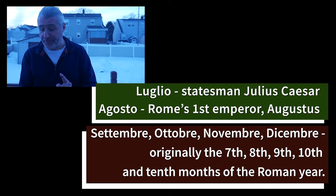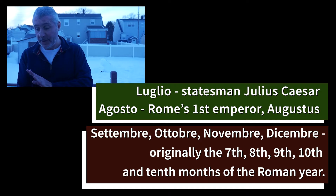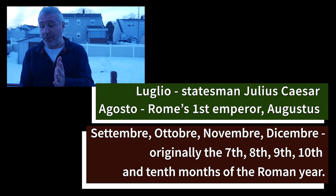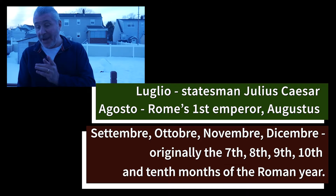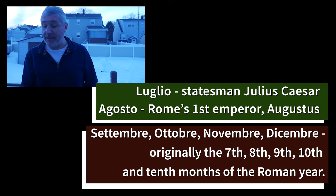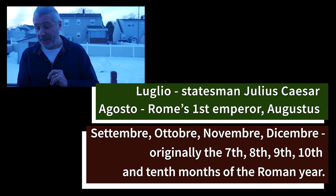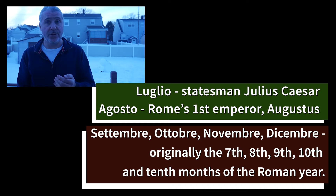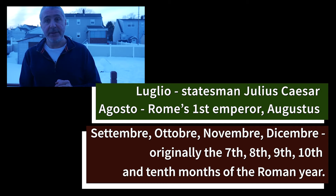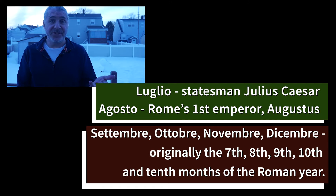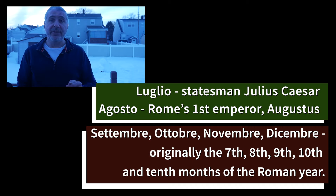The interesting thing is Luglio and Agosto — prior to those names, they were referred to as Quintilis and Sextilis, the fifth and sixth months of the year. And then from September to December, we have Settembre, Ottobre, Novembre, Dicembre — which were actually originally the seventh, eighth, ninth, and tenth months of the Roman year. Originally there were ten months in the year before two extra months were added. So September being the seventh — Settembre, sette, seven. Ottobre from otto, eighth. Novembre from nove, nine. And Dicembre from dieci, meaning ten. So that just stuck — September through December is seven, eight, nine, ten — even though we have twelve months in the year, because two additional months were added, giving us twelve months.